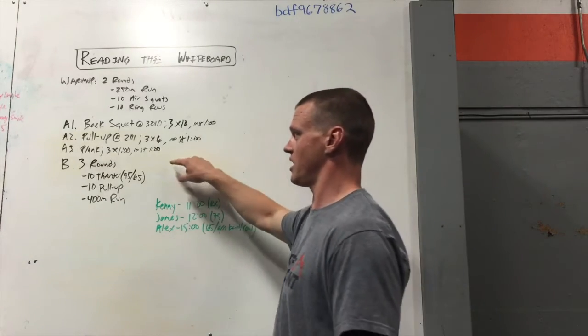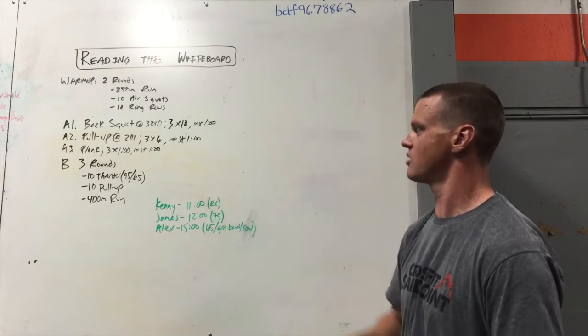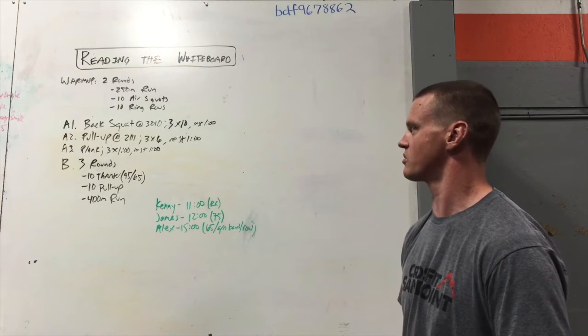If there's a B1 and a B2, you'd follow that same kind of structure. You'd do B1, B2, B1, B2, B1, B2, and alternate through those.